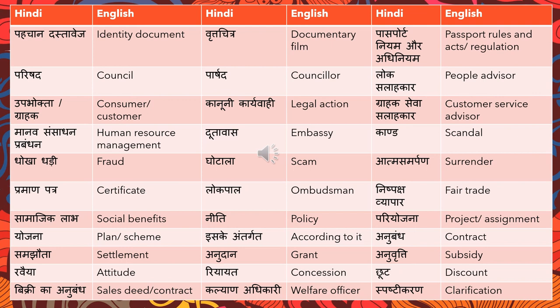These words are very important because they come up in a lot of dialogues — whether social dialogues, health insurance dialogues, or dialogues about benefits. Make sure you read through these and are able to retain them while practicing sample dialogues. 'Ravaiya' means attitude. 'Riayat' means concession. 'Chhut' means discount. 'Vikri ka anubandh' means sales deed or sales contract. 'Kalyan adhikari' means welfare officer. 'Spashti karan' means clarification.